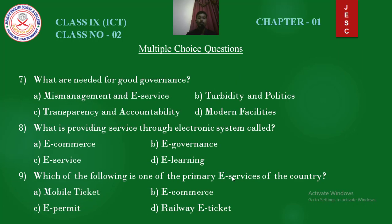Question number 7: What is needed for good governance? Options: mismanagement and e-service, turbidity and politics, transparency and accountability, modern facilities. Answer is transparency and accountability. Question number 8: What is providing service through electronic system called? Options: e-commerce, e-governance, e-service, e-learning. Answer is e-service.